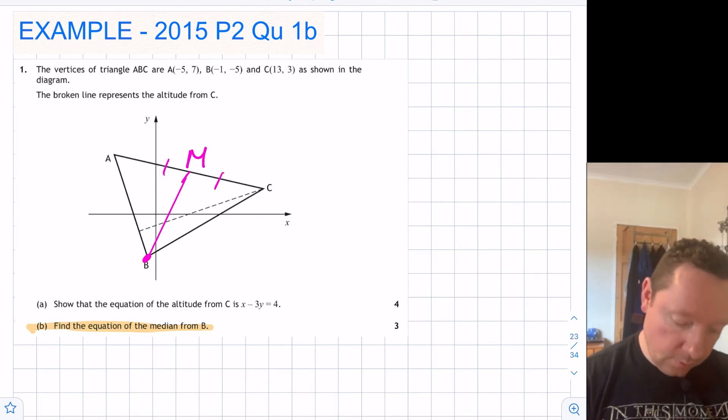So we can find our midpoint. To find M we're looking at two points. We're looking at A and C because it's between A and C. So it's -5 add 13 divided by 2 and it's 7 plus 3 also divided by 2.